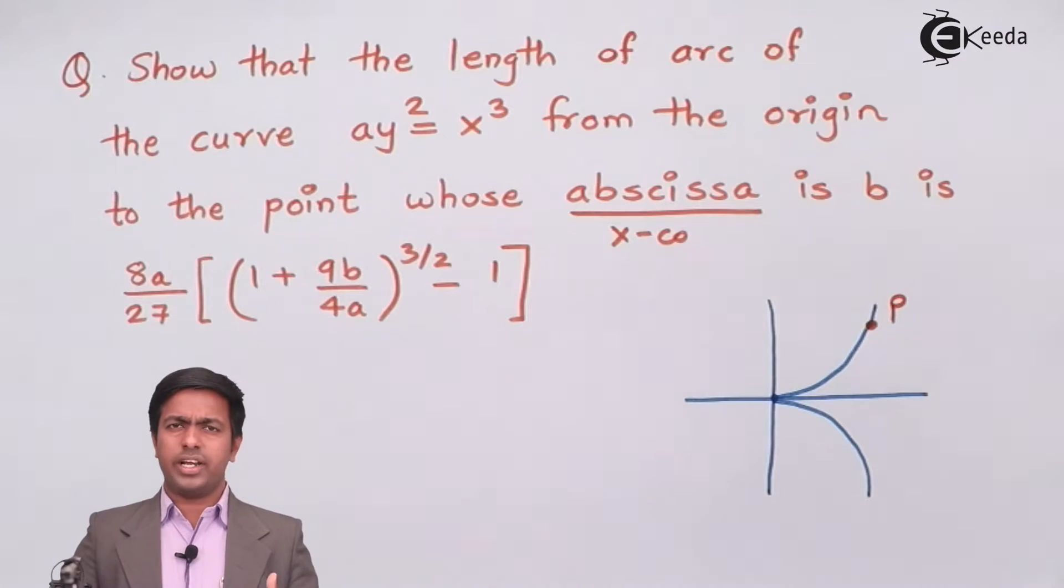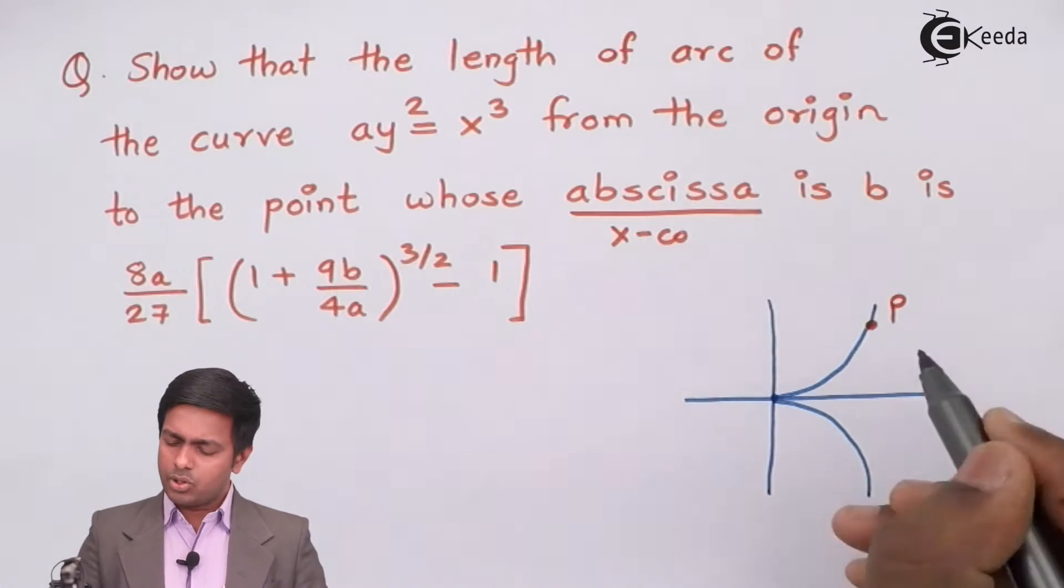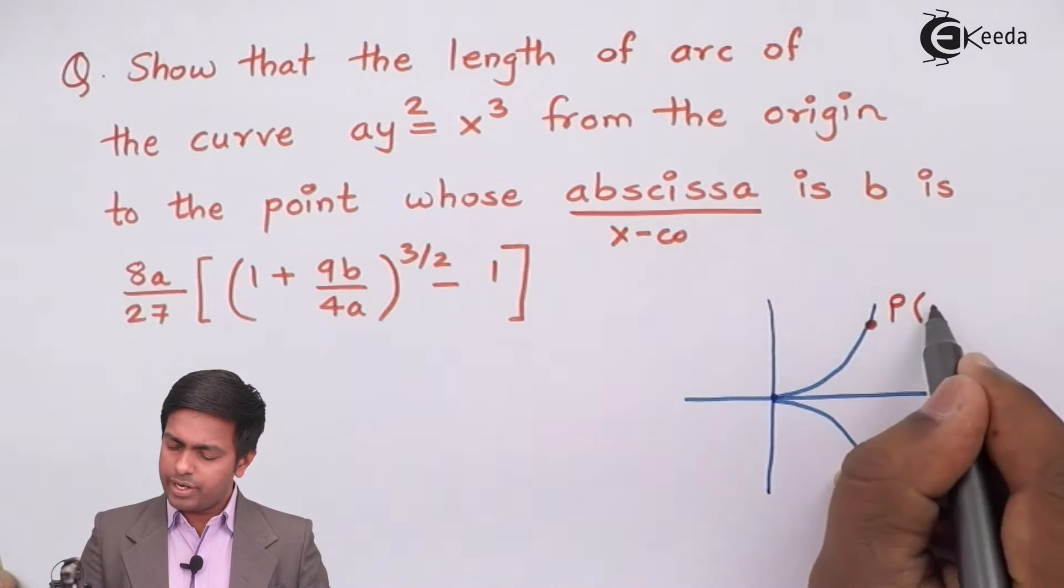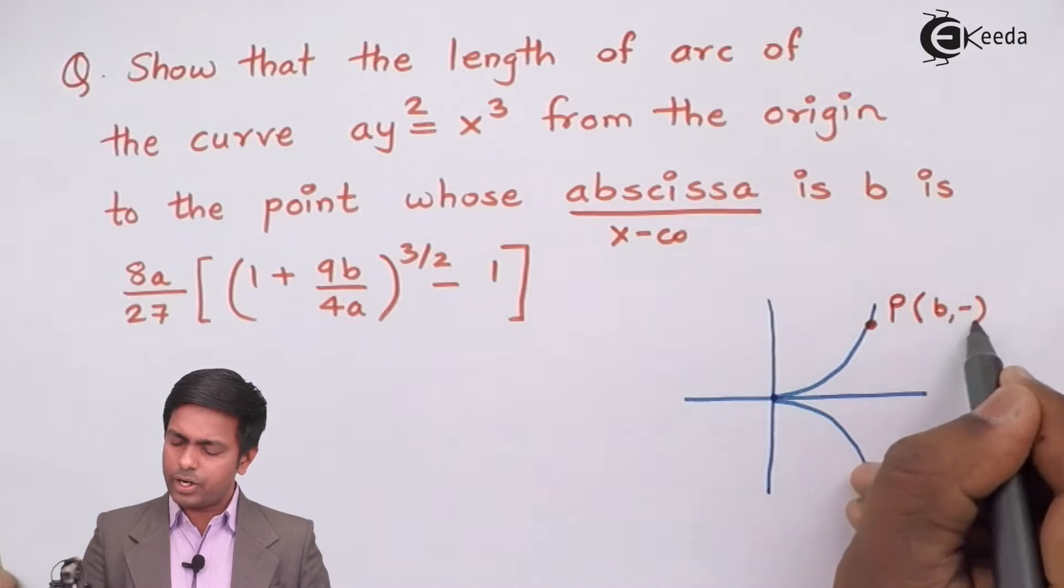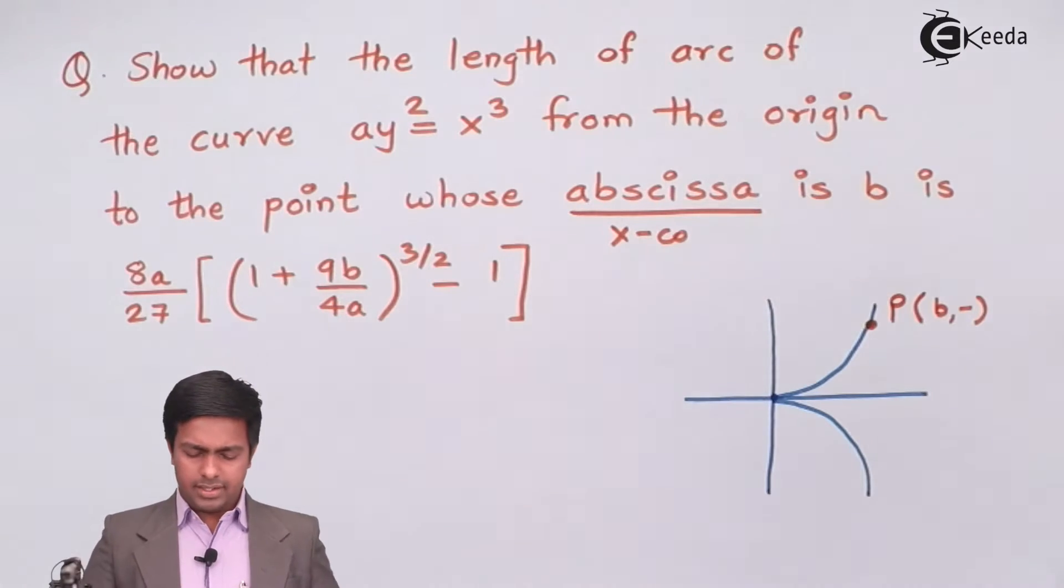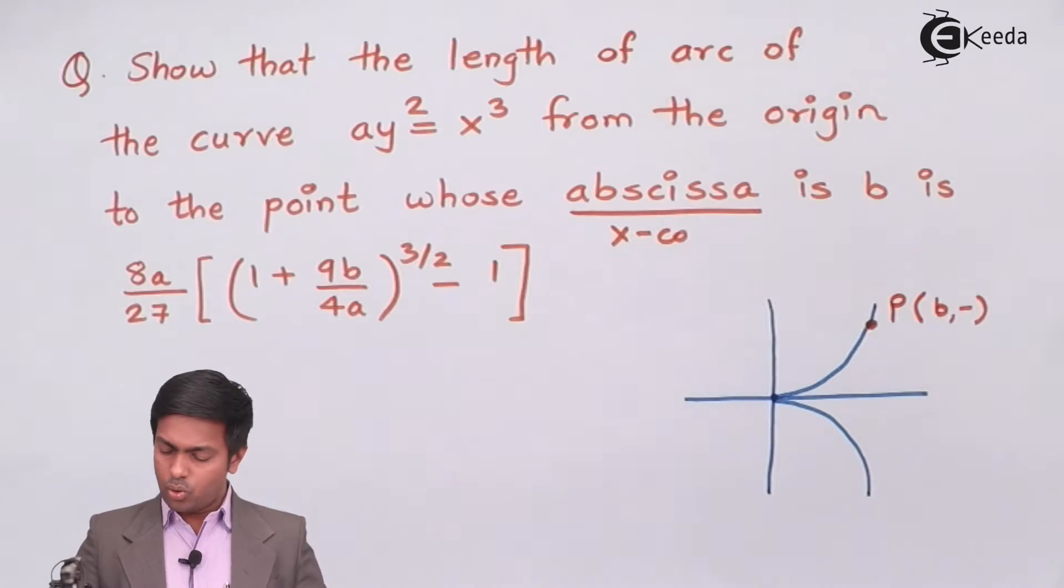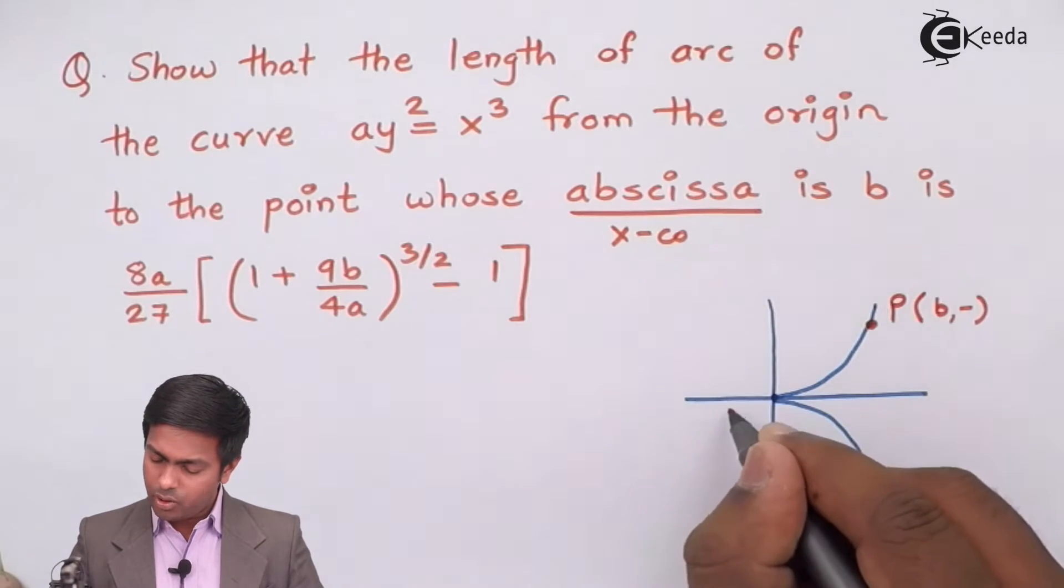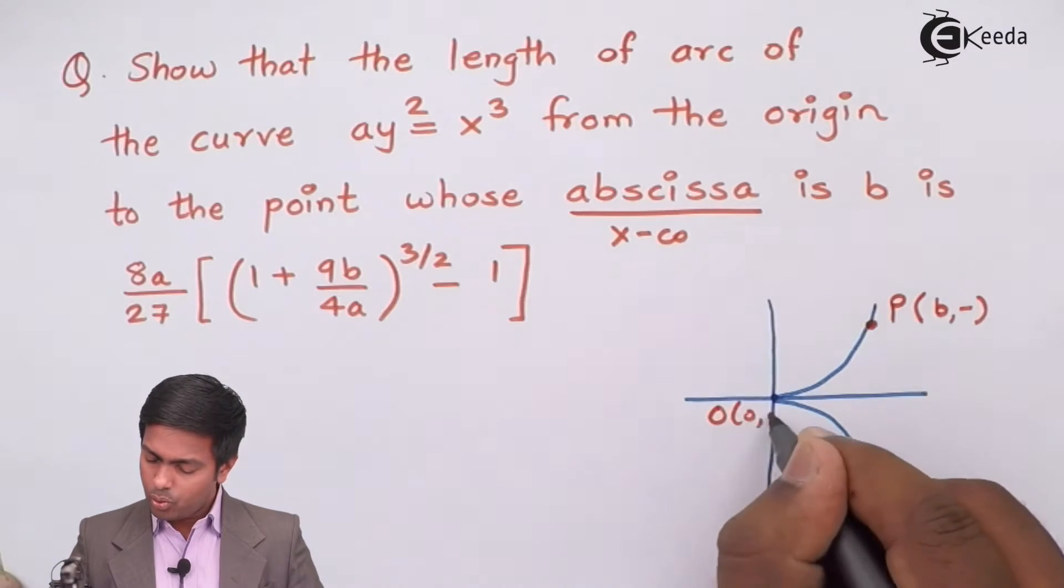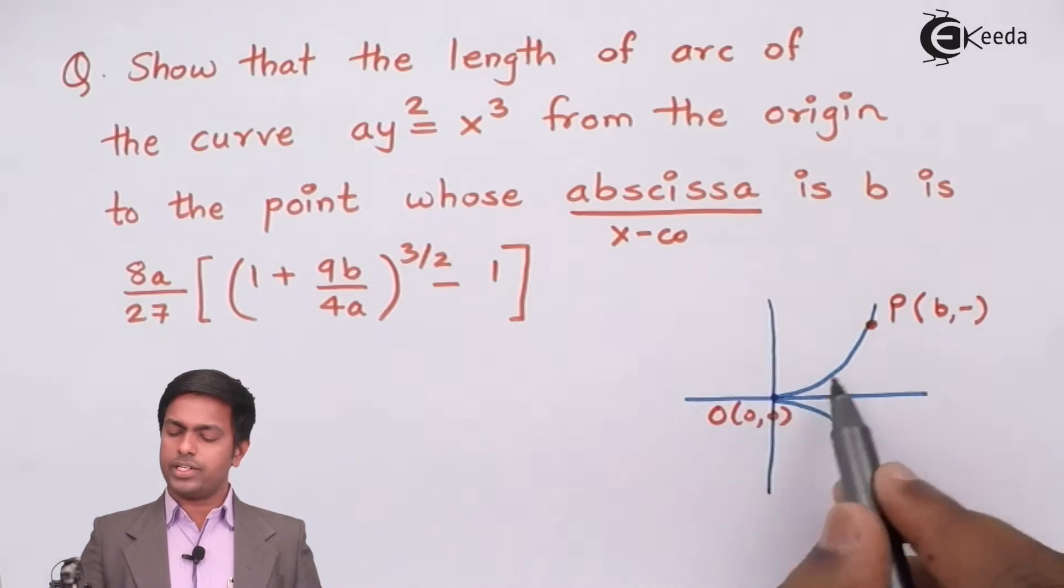So the x coordinate is nothing but the abscissa. So it means the x coordinate of this point is b. We don't know about the y coordinate. Now if you will observe these two points, let's call this point as O. So I have to find out the length of curve from O to P or I have to find out this OP.